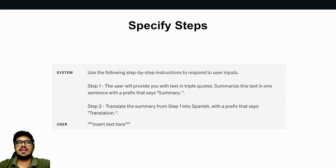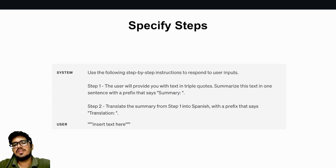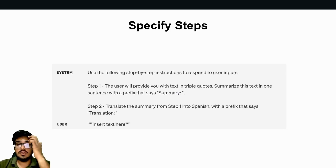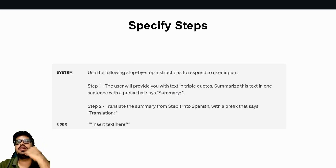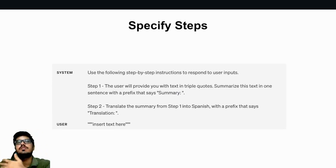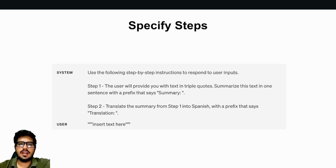For specifying steps, the example used is: 'step one — the user will provide you with text in triple quotes; summarize this text in one sentence with a prefix that says Summary. Step two — translate the summary from step one into Spanish with a prefix that says Translation.' Specifying steps helps the model execute them in sequential format. Without this, the model may just do what it feels best and skip one of your steps.